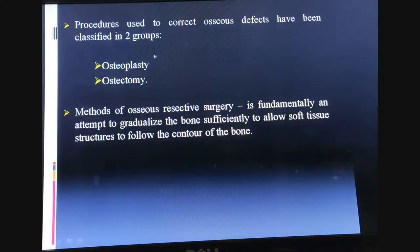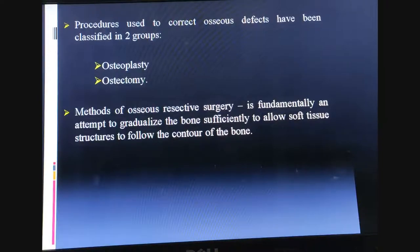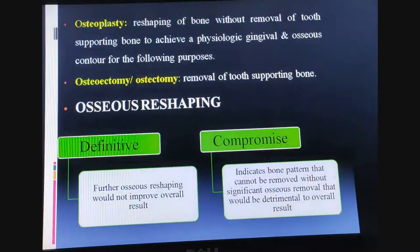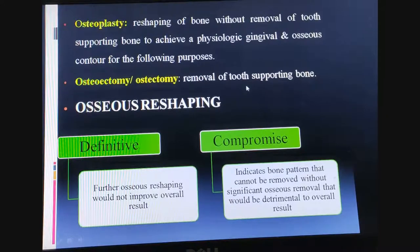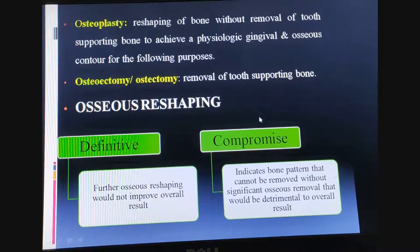Procedures used to correct osseous defects are classified into two groups: osteoplasty and osteotomy. Resective osseous surgery is fundamentally an attempt to gradualize the bone sufficiently to allow soft tissue structures to follow the contour of the bone. Osteoplasty is reshaping of bone without removal of tooth-supporting bone to achieve physiologic gingival and osseous contour, whereas osteotomy is the removal of tooth-supporting bone.